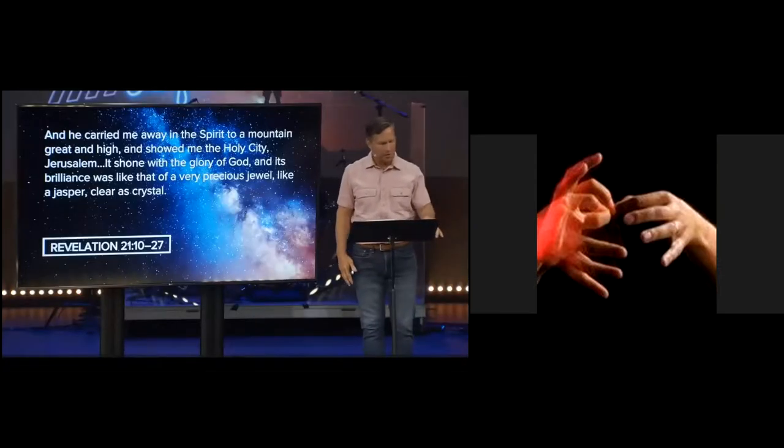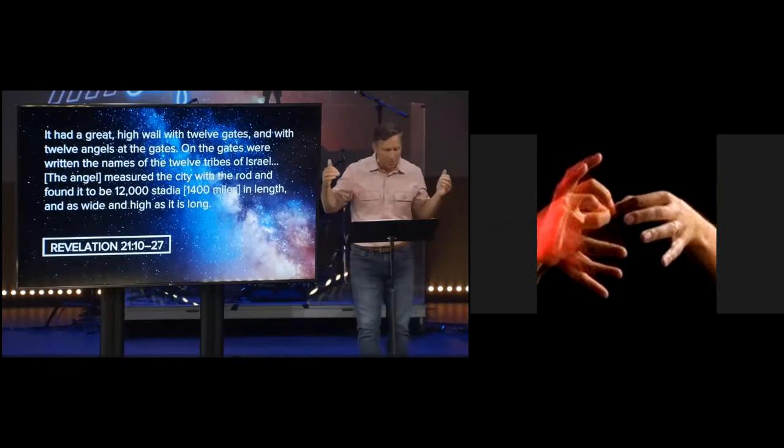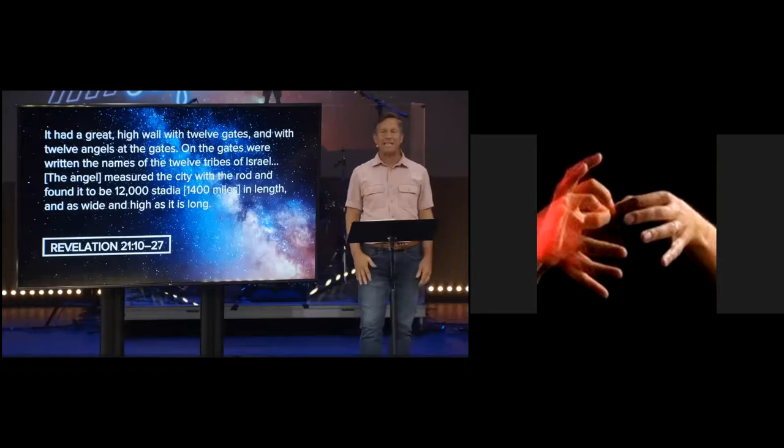He says, and he carried me away in the spirit to a mountain great and high and showed me the holy city, Jerusalem. It shone with the glory of God and its brilliance was like that of a very precious jewel, like jasper, but clear as crystal. It had a great high wall with 12 gates and with 12 angels at the gates. And on the gates were written the names of the 12 tribes of Israel. The angel measured the city with a rod and found it to be 12,000 stadia, which is about 1,400 miles in length and as wide and as high as it is long.